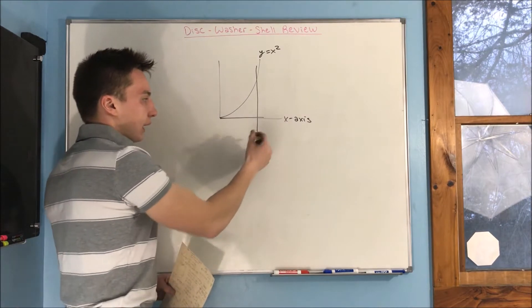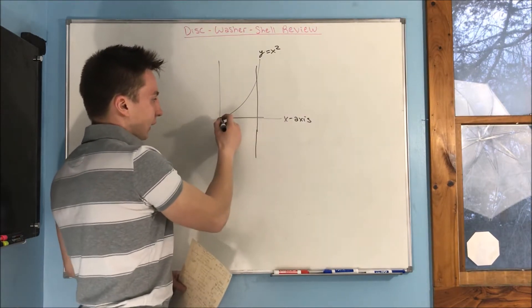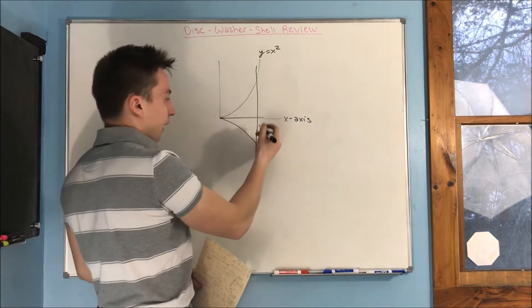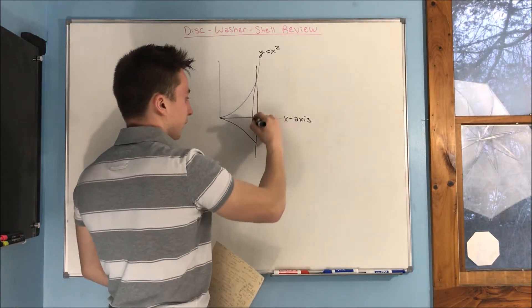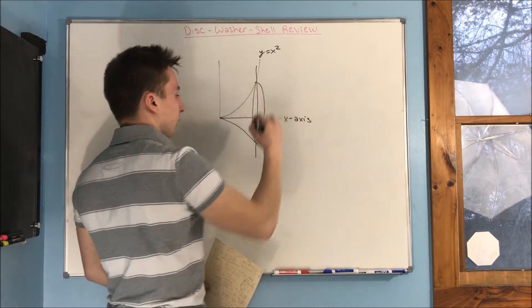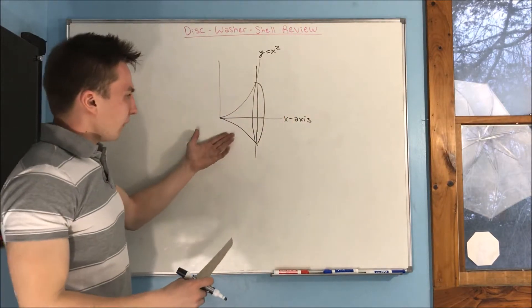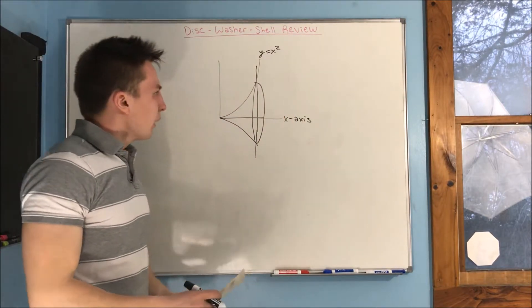Now, what happens when we revolve around the x-axis? We're going to get something that looks like, basically like this. We'll get a little kind of cone-like figure.